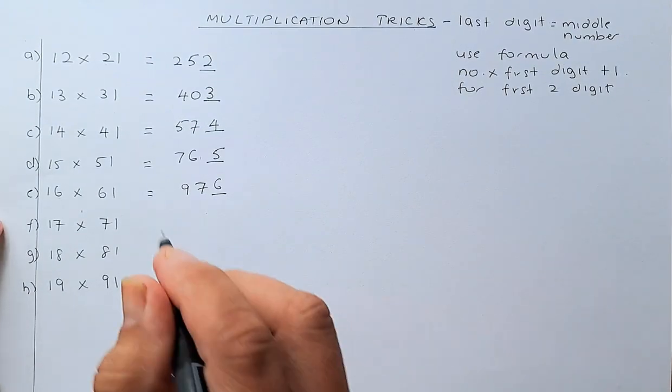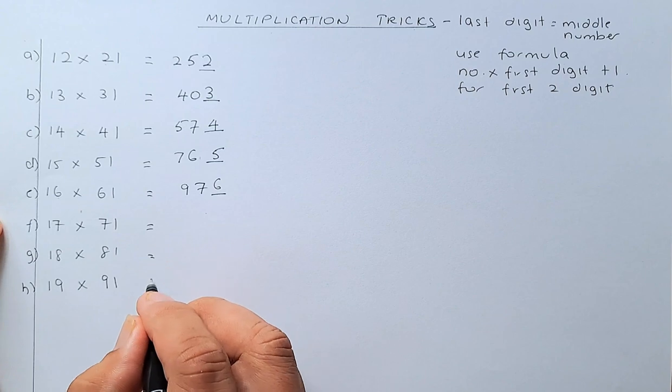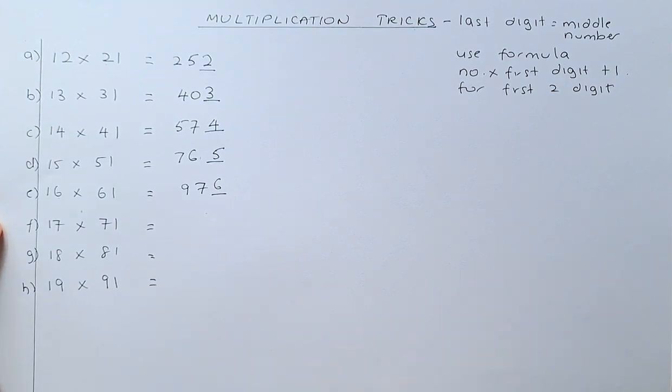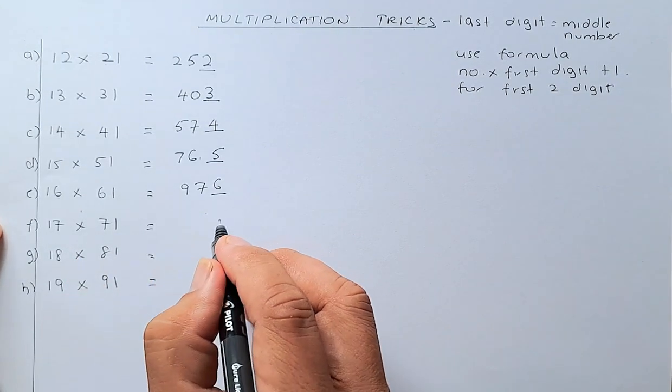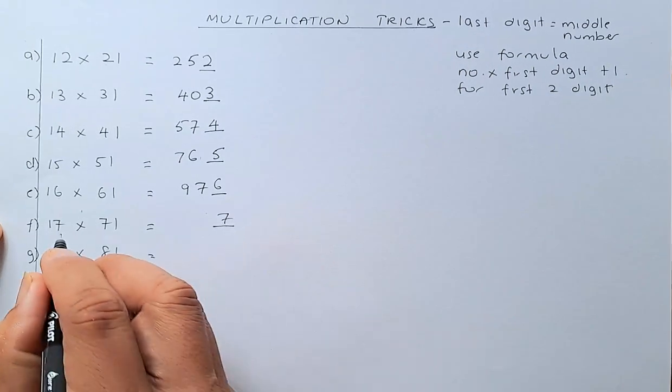The last 3 are going to be a bit harder because the multiplication gets a bit bigger. So, now, we shall do this. The last digit is going to be 7 because the middle number is 7.